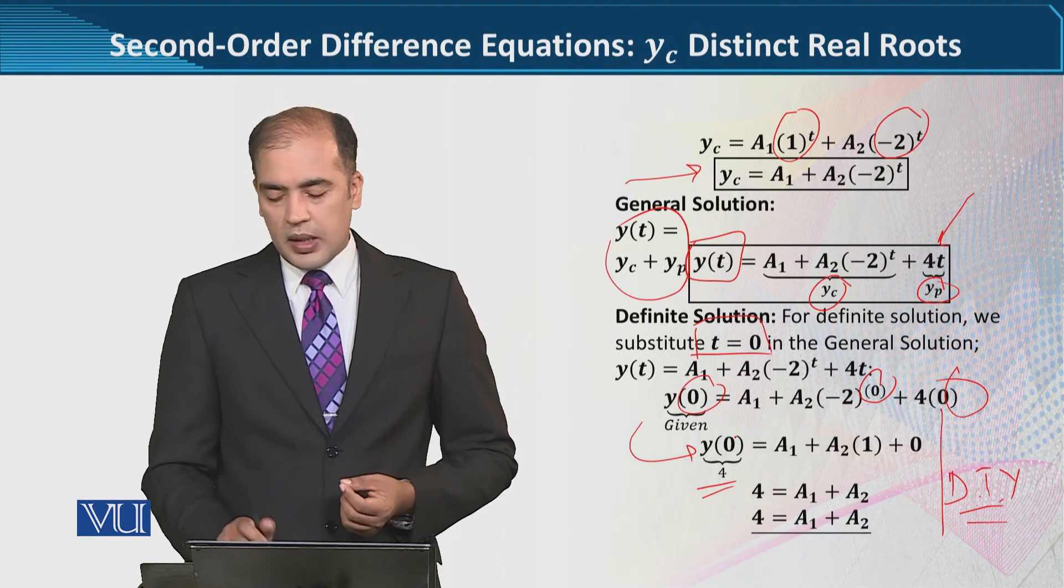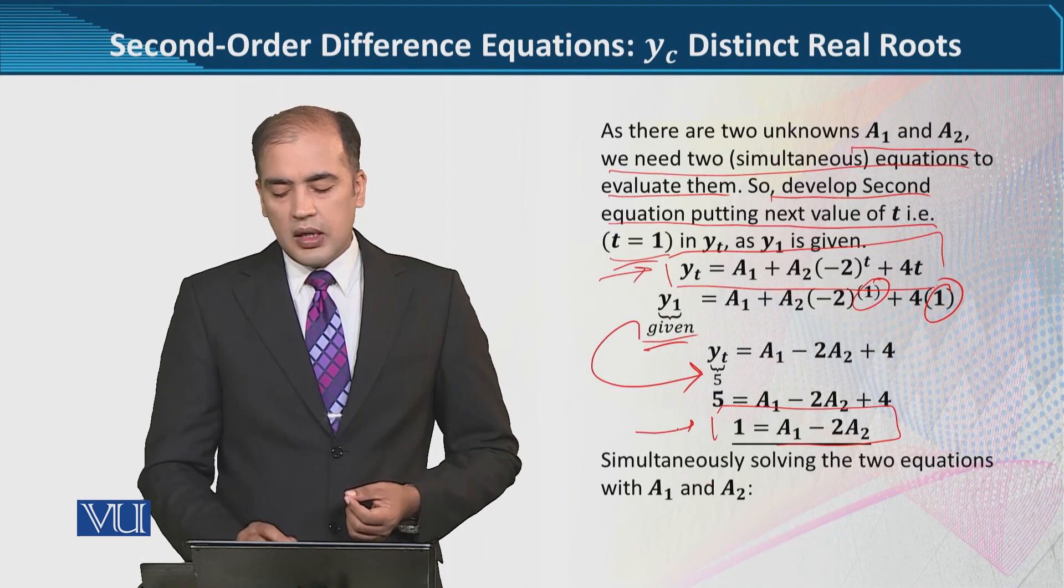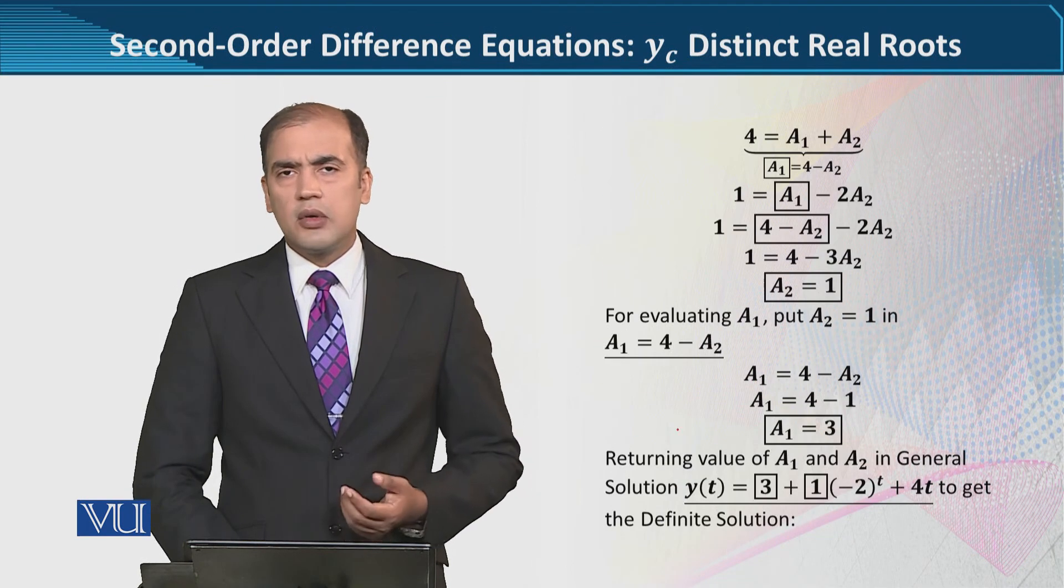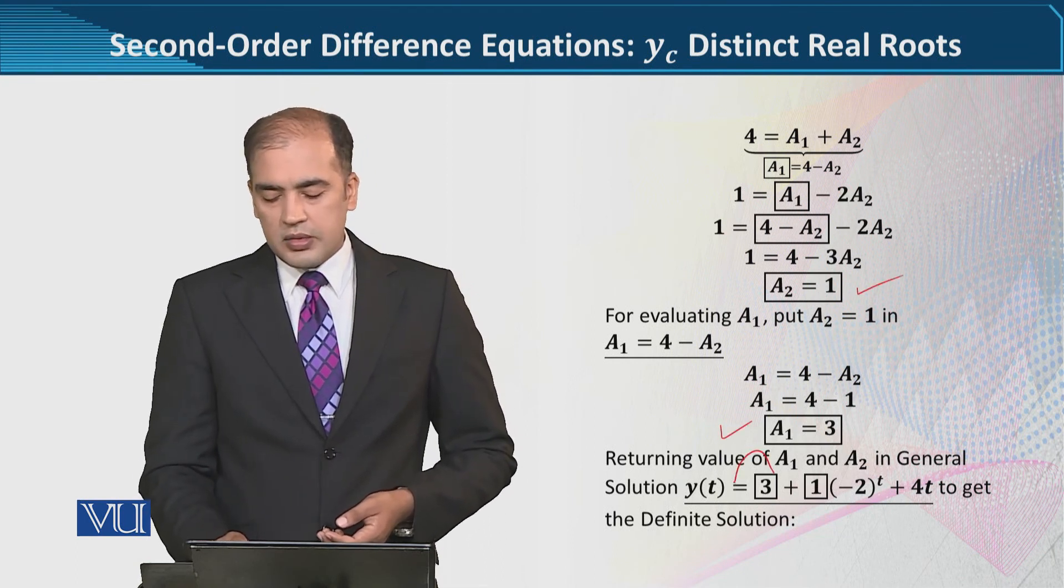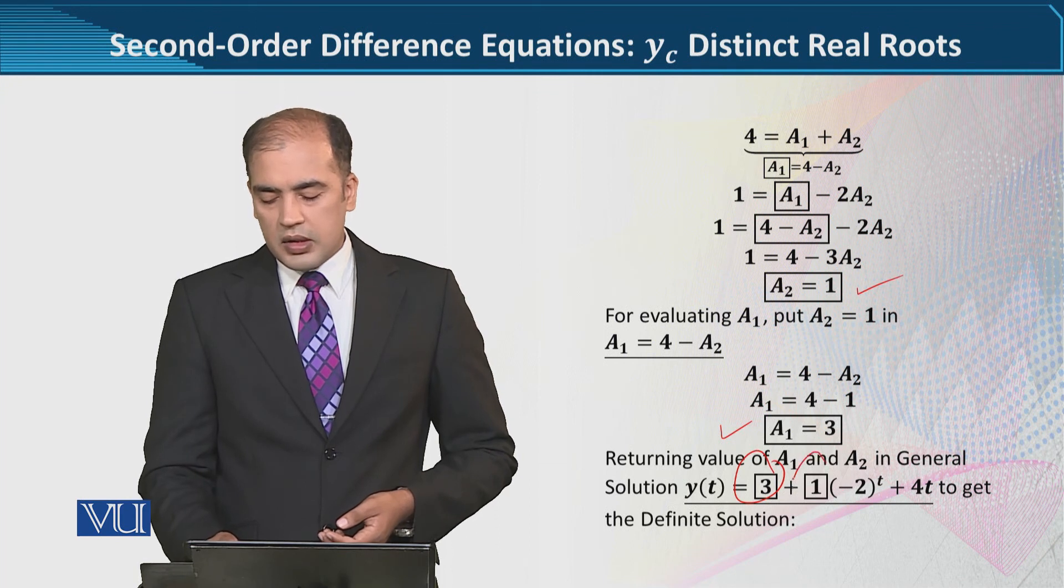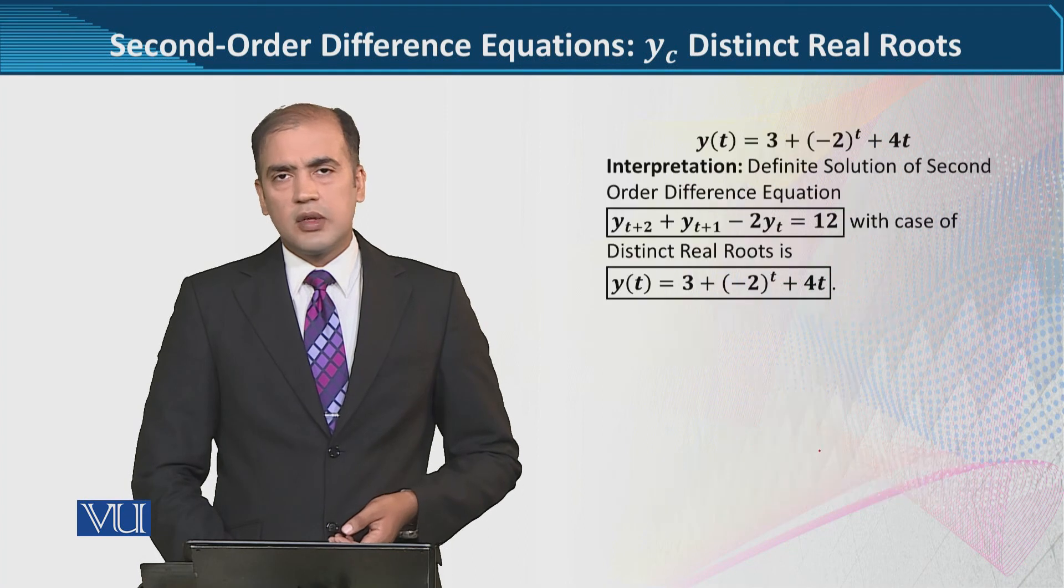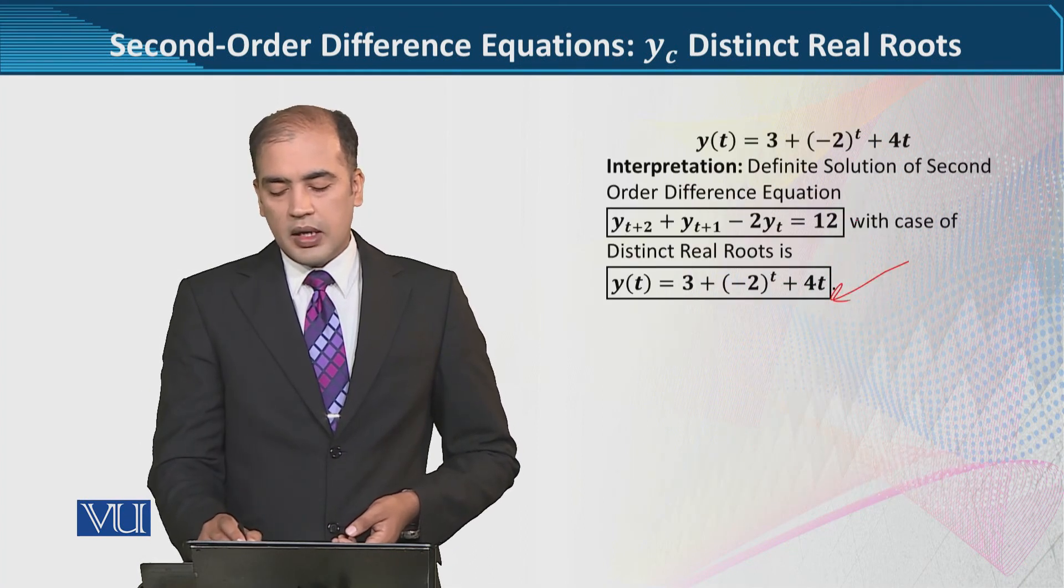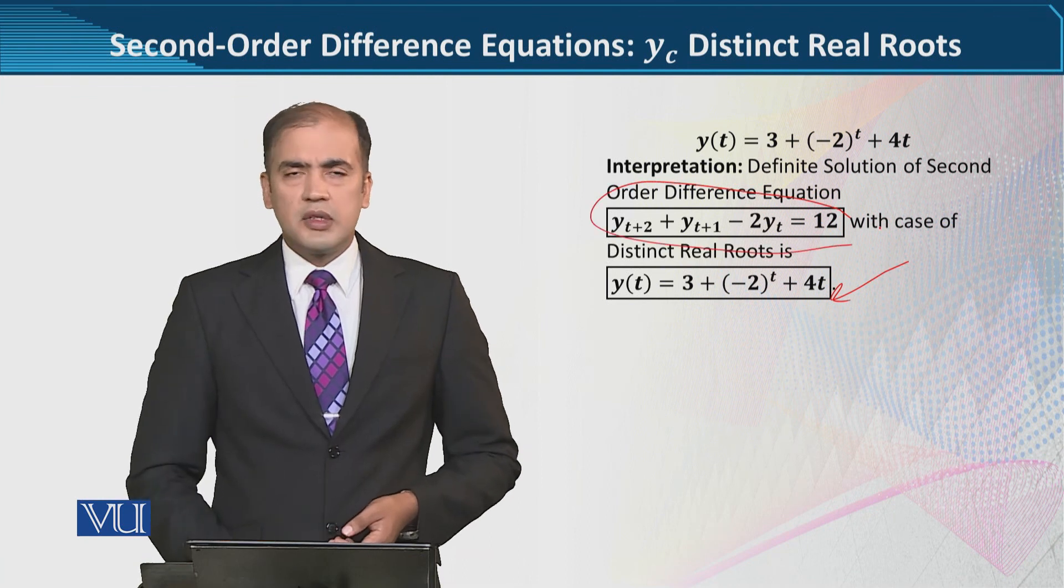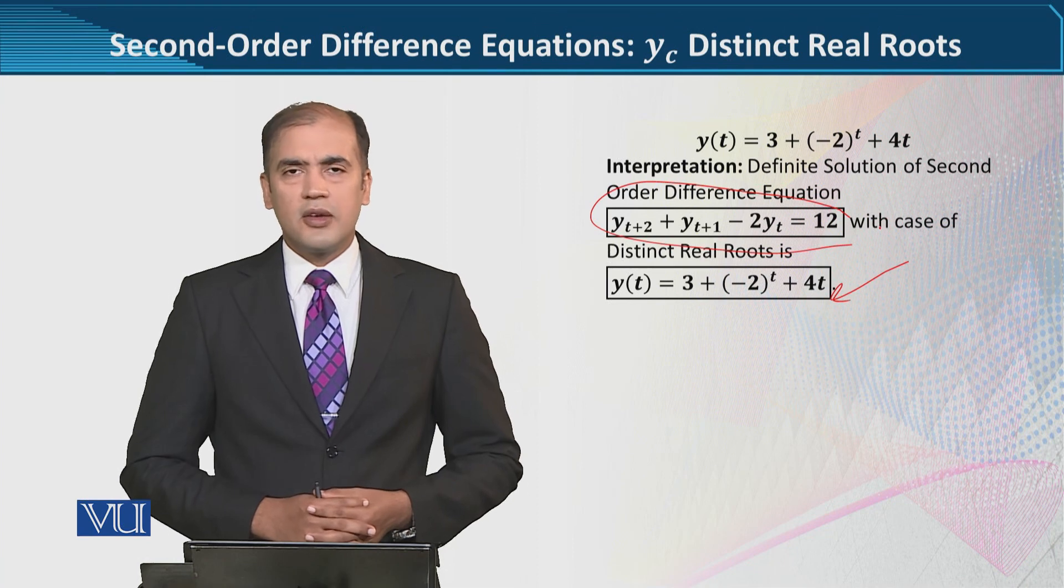We can see that in a simultaneous solution, we have A1 and A2 values which you can see fit into the places in the general solution, and you can see the definite solution. Thank you.